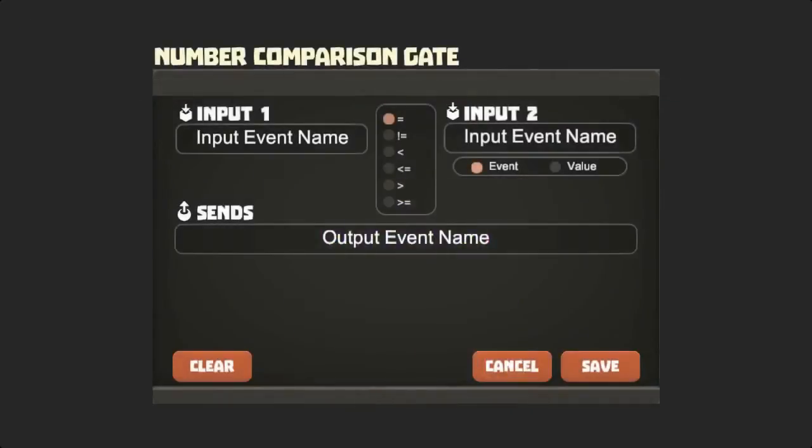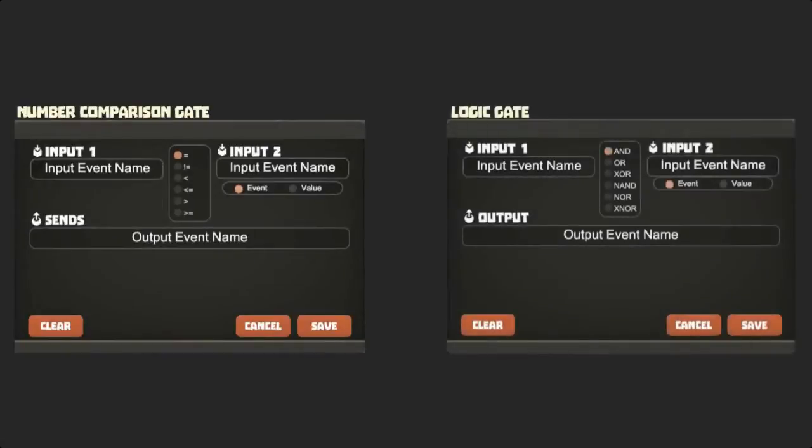When we place and inspect the comparator, we see it has two inputs, an output, and a selection of six different operations. It looks like the logic gate, but does it behave like one?